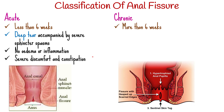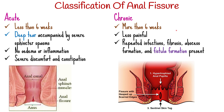Chronic anal fissure is present for more than 6 weeks. It is less painful than acute. Repeated infections, fibrosis, abscess formation, and fistula formation are all possible outcomes.